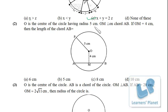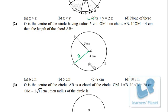Next: O is the center of the circle having radius 5 cm. OM is perpendicular to chord AB. If OM equals 4 cm, find the length of chord AB. OA is also 5 cm since it is a radius. The perpendicular from the center bisects the chord, so AM equals MB. With OA = 5 and OM = 4, we get AM = 3 by Pythagoras. So MB is also 3, and the length of chord AB is 6 cm.